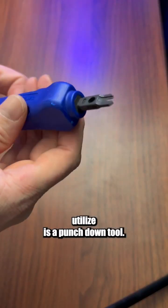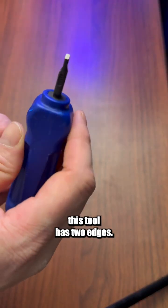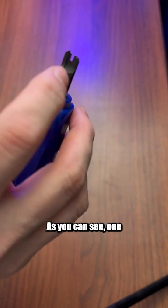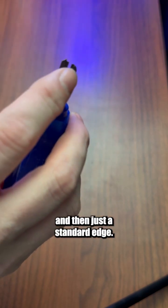The next tool we're going to utilize is a punch-down tool. It's important to note this tool has two edges, as you can see, one which will have a cutting edge and then just a standard edge.